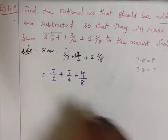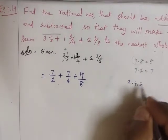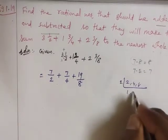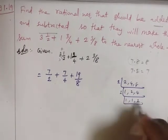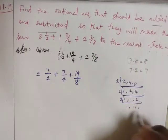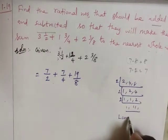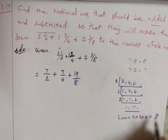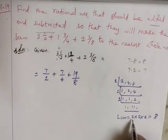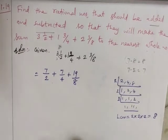To find LCM of 2, 4, 8: 2 times 2 times 2 equals 8. The LCM is 8. Now converting: 7/2 times 4 equals 28/8.